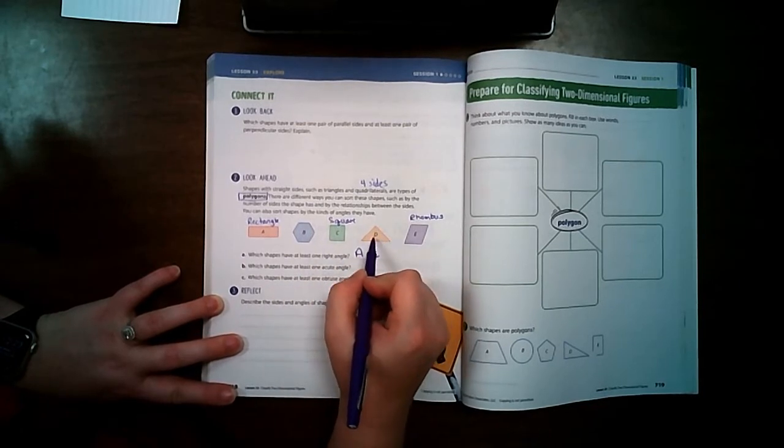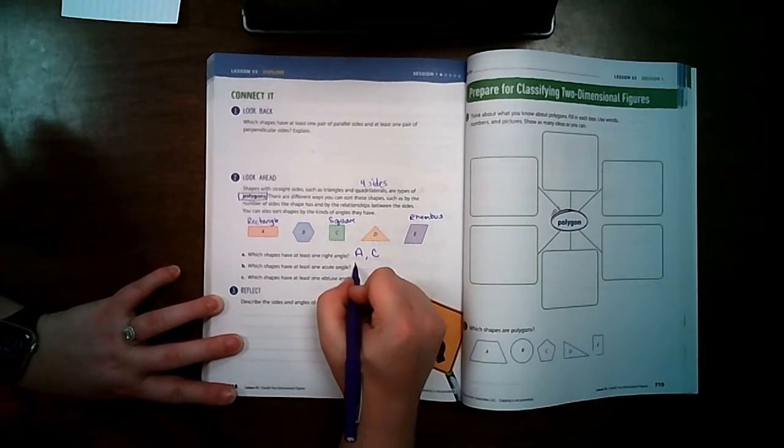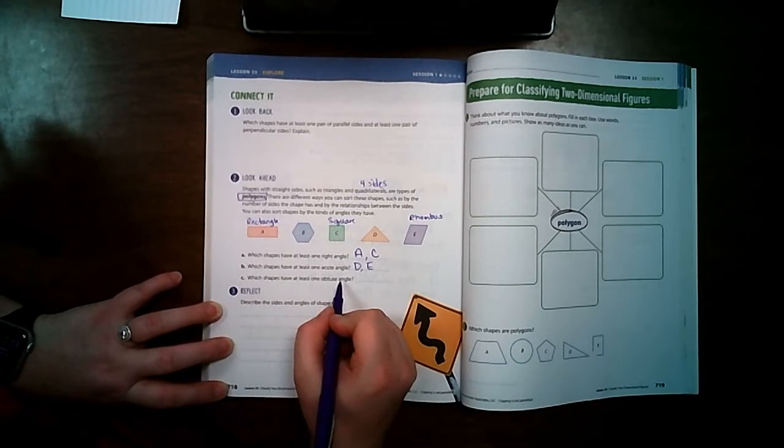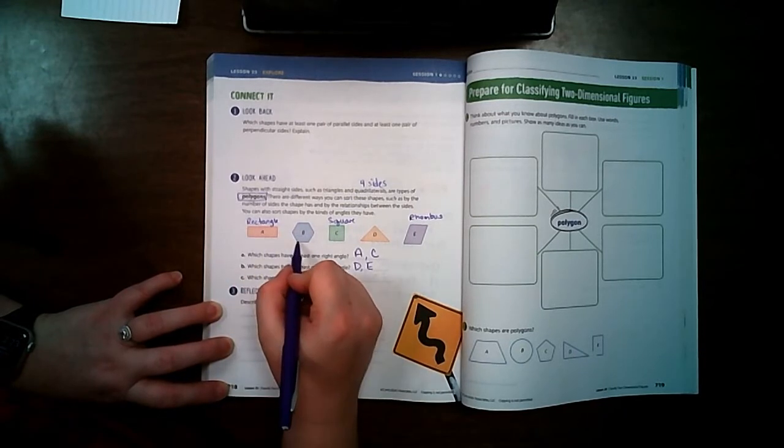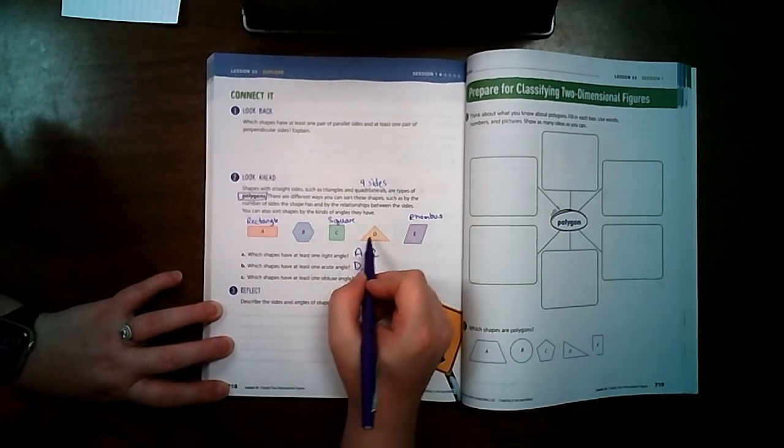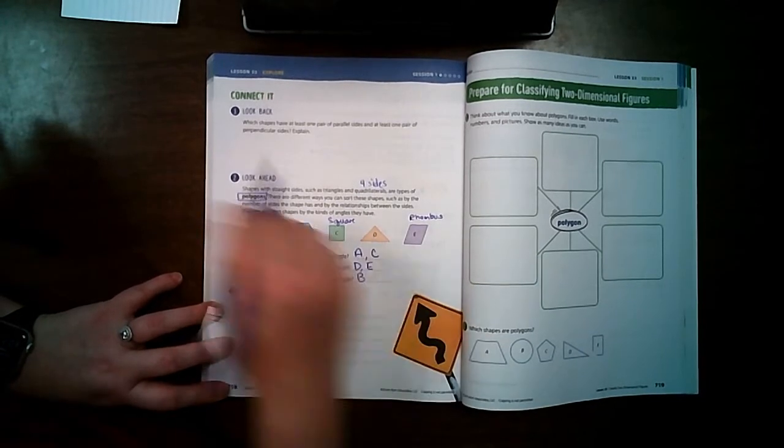These look like they have acute. And that right there looks acute. So D and E. Which shapes have at least one obtuse angle? These are all right. This one has obtuse. These are all right. And over here, it's kind of hard to tell.